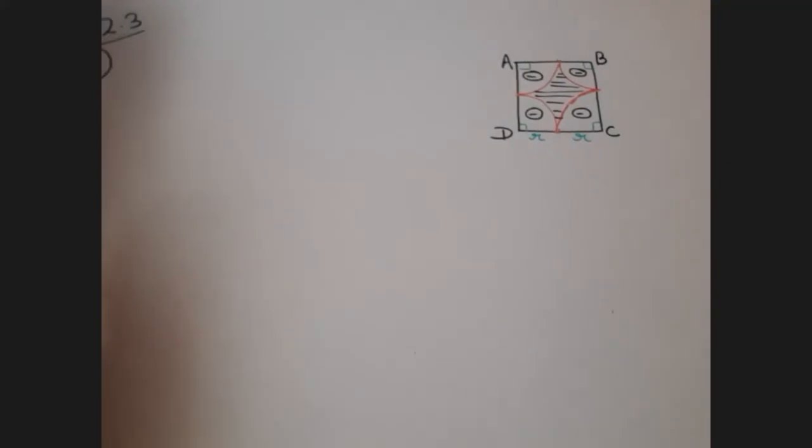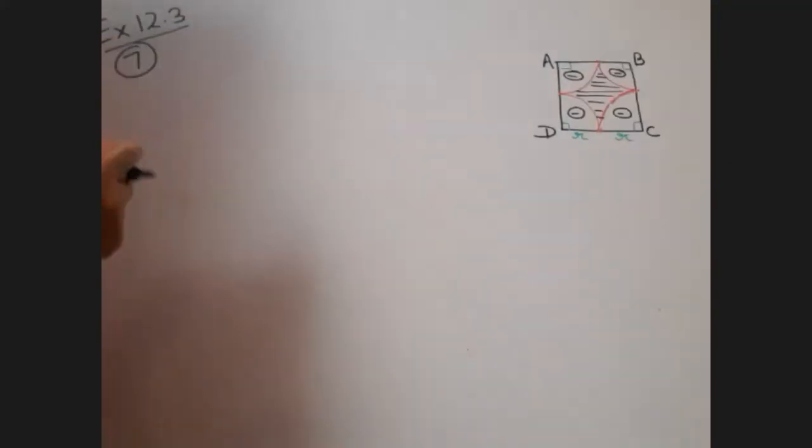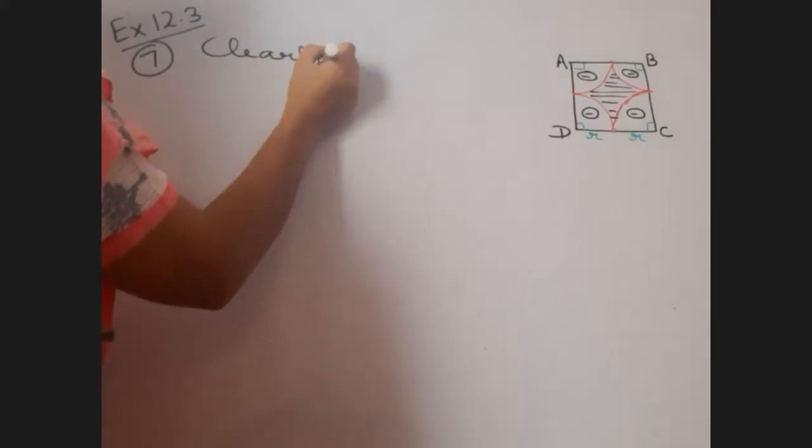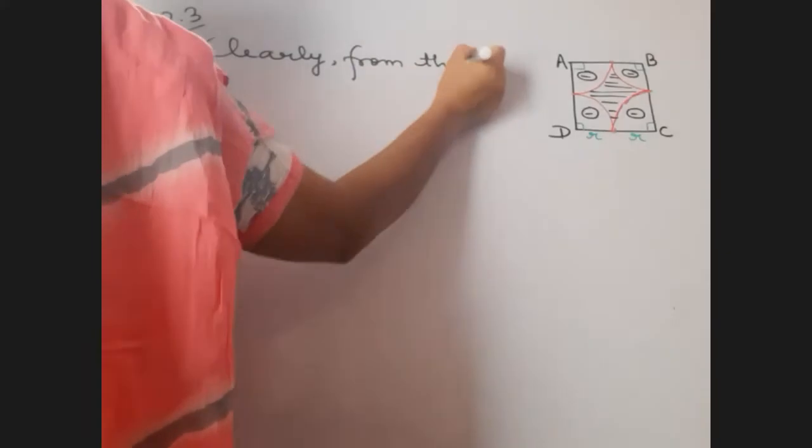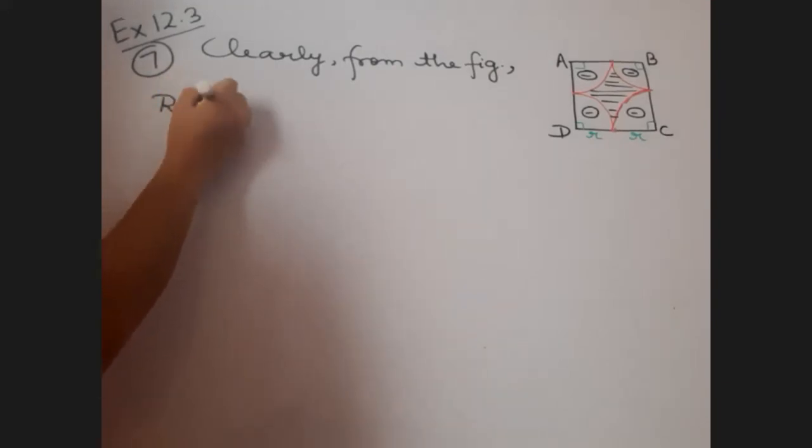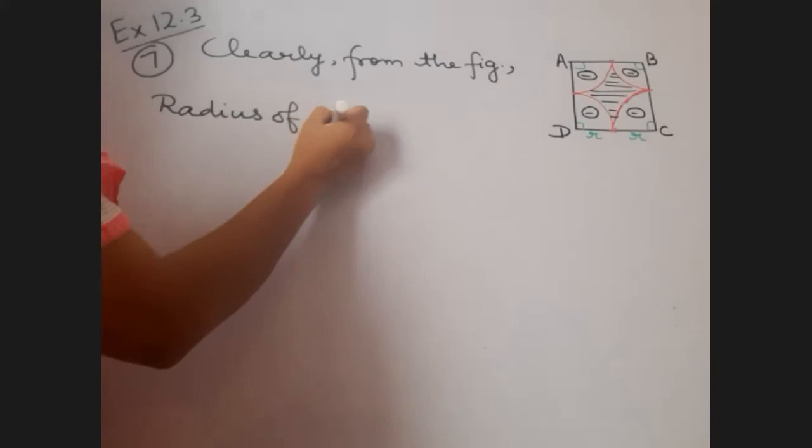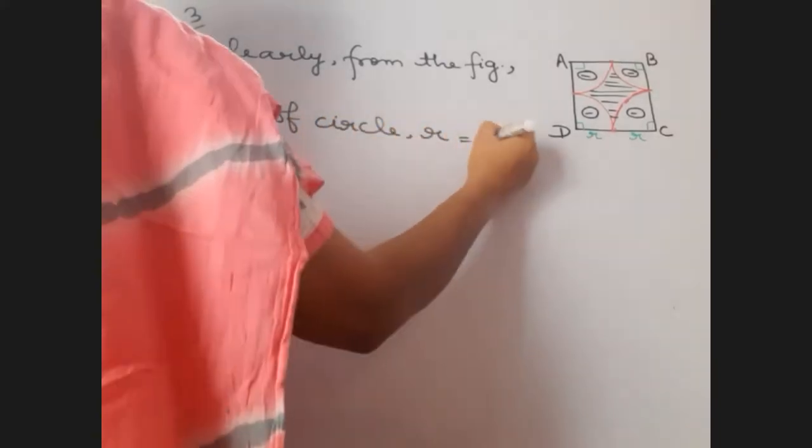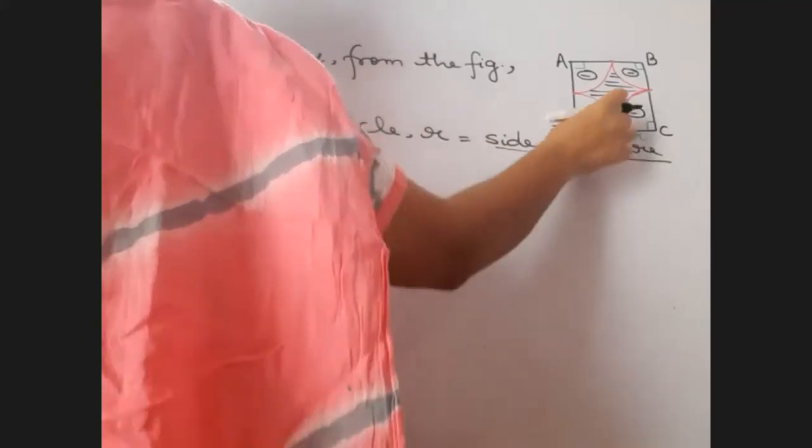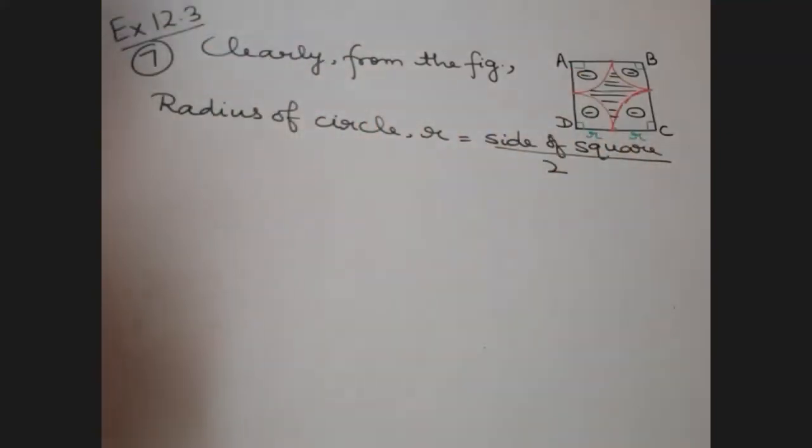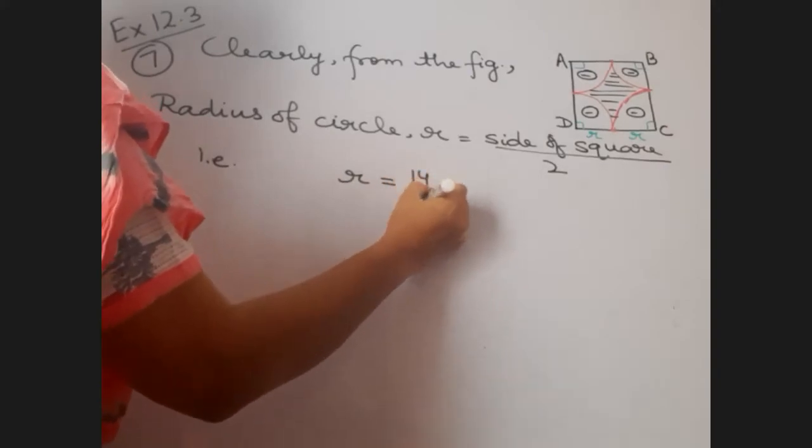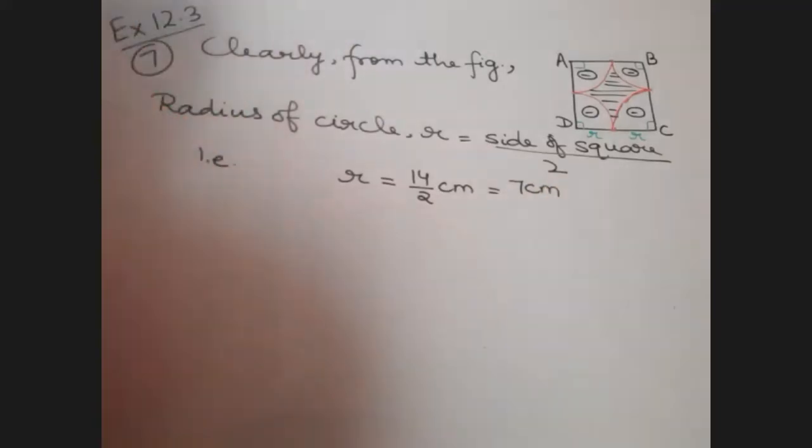Let us write it down. So, we have, we will write like this. Clearly, from the figure, radius of circle, comma R, is equal to side of square, divided by two. That is, R is equal to 14 upon 2 centimeter, which is 7 centimeter.